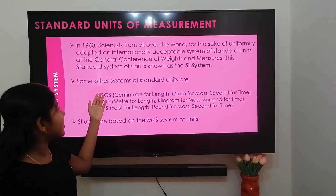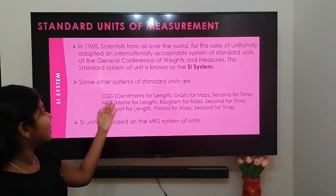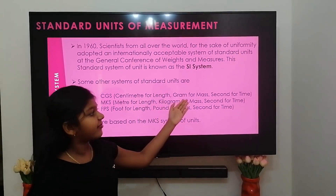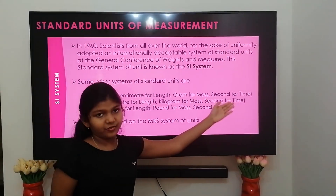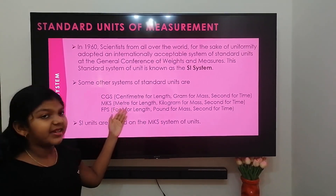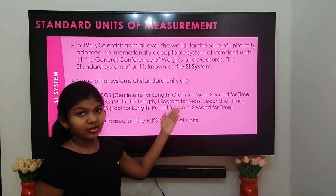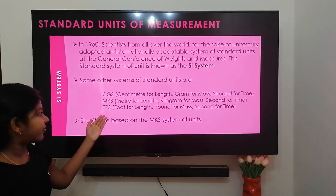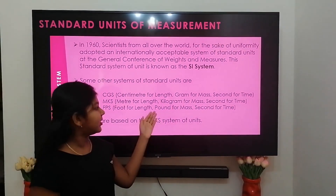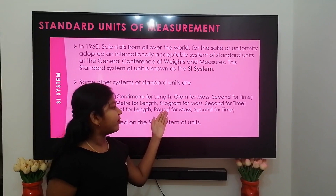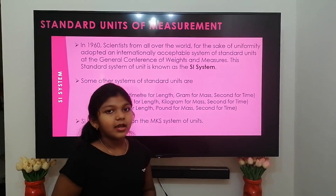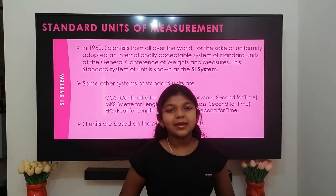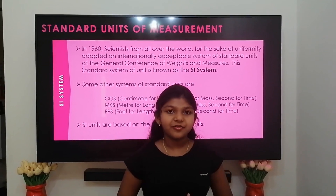Some other systems of standard units are: the CGS system — centimeter for length, gram for mass, and second for time; the MKS system — meter for length, kilogram for mass, and second for time; and the FPS system — foot for length, pound for mass, and second for time. The SI system of units is based on the MKS system of units.